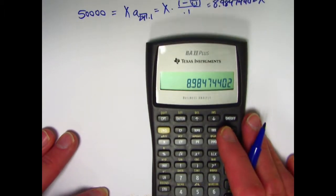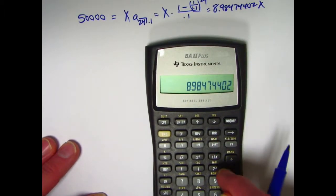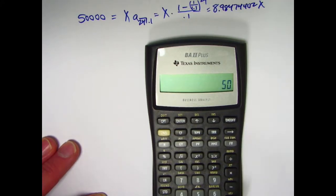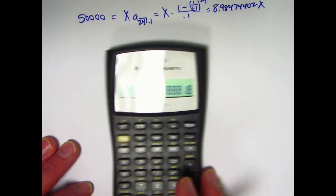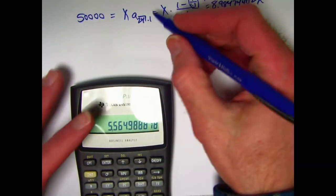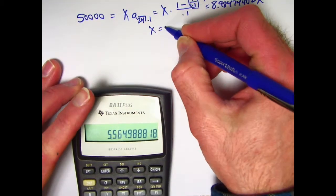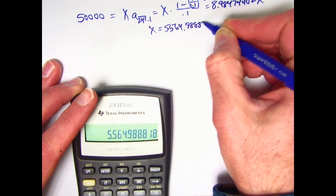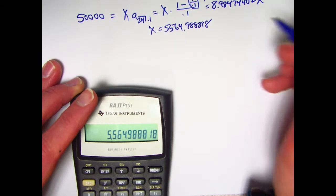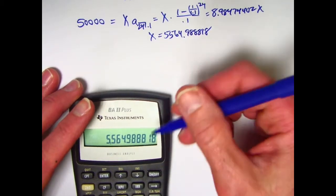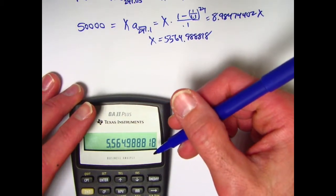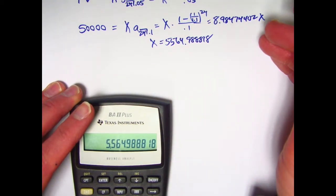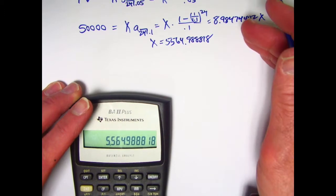So, now solve for X. We can take the reciprocal of this thing and multiply it by 50,000. So, X must be this quantity here. X is 5564.988818. Carrying more decimals than I really need to, but okay. I'm going to be careful here. That's X. That's the payments. We get 24 of those things for the next 24 years.